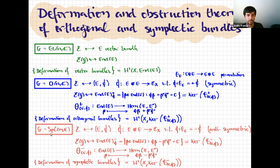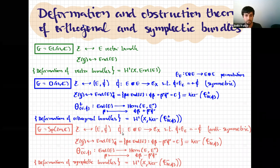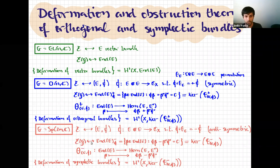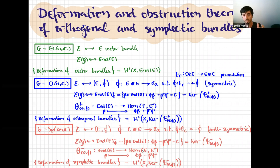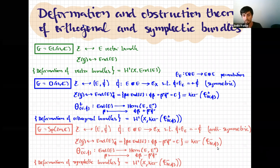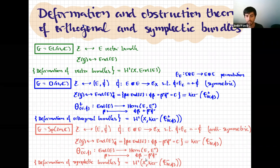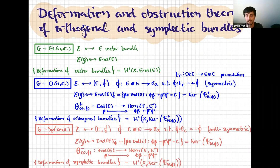The same story holds for the symplectic case. Here the reduction from GL(n,C) to Sp(2m,C) requires a quadratic form which is anti-symmetric under permutation of the entries. The adjoint bundle is given by those endomorphism bundles that are symmetric under composition with this quadratic form, again expressed as the kernel of a map, but now anti-symmetrizing. Deformations of symplectic bundles are given by H1 of this kernel.